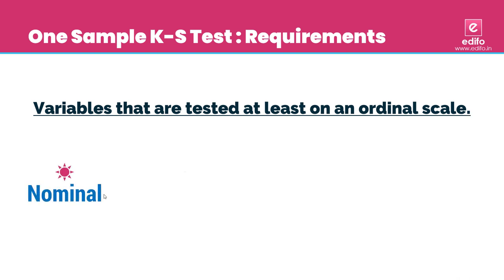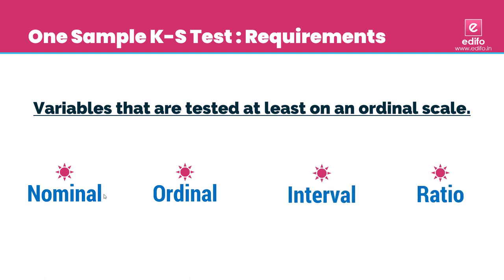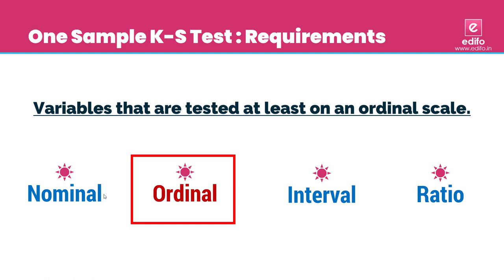The next requirement is that the variables tested should be at least on an ordinal scale. There are four types of scales of measurement: nominal, ordinal, interval, and ratio. In chi-square tests, data is collected in nominal form, but for the KS test, you should collect data at least in ordinal form — though interval or ratio scales are also acceptable.